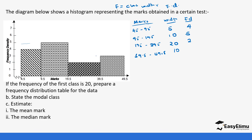To get the frequency we multiply class width times frequency density. So 5 times 4 gives us 20, 10 times 5 gives us 50, 20 times 2 gives us 40, and 10 times 3 gives us 30. These are our frequencies, and you notice the first class has a frequency of 20, just as stated in the question.